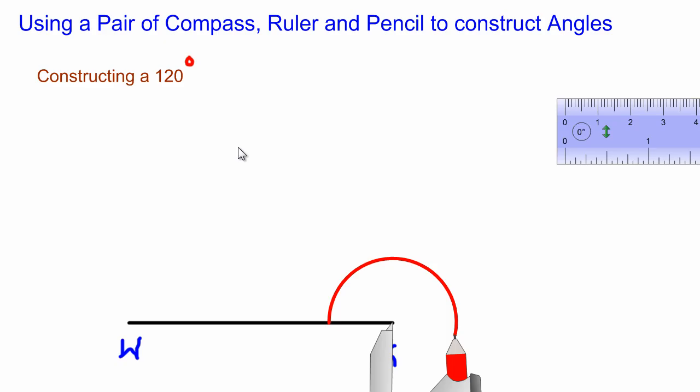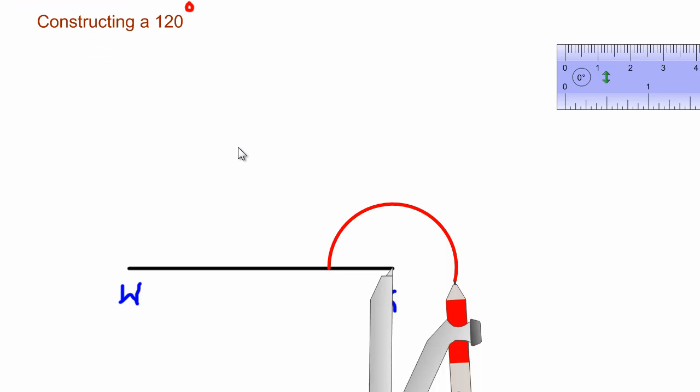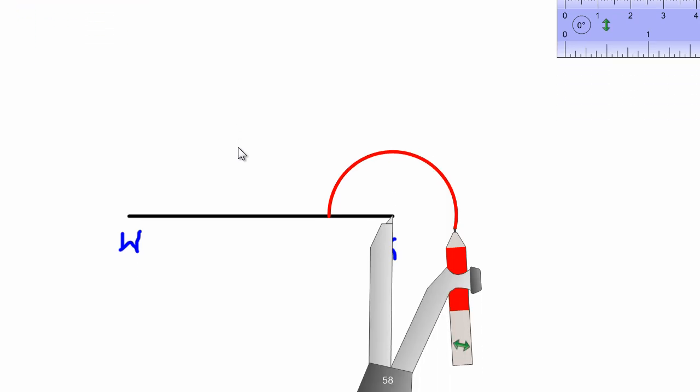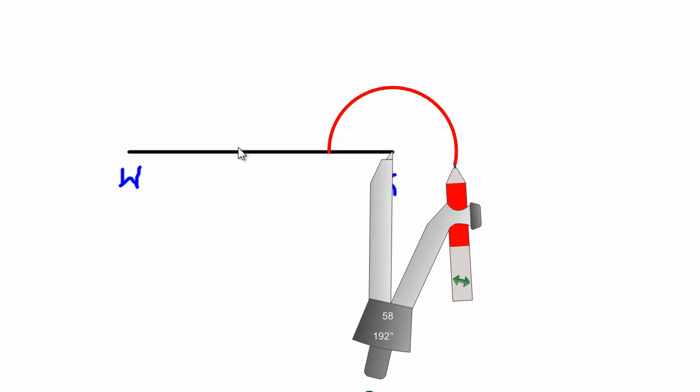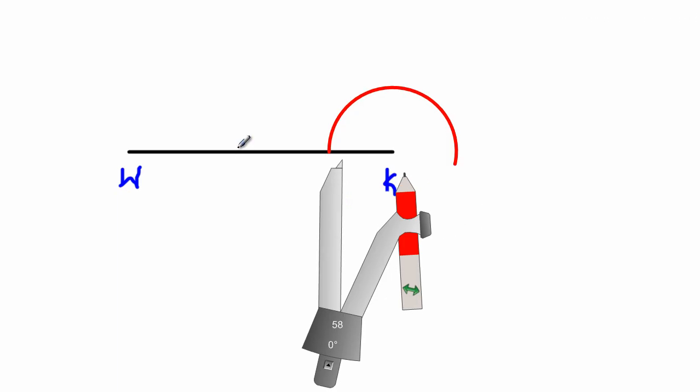Now after the arc has been swung, what I'm going to do is take my compass and place it at this point where the arc touches or cuts the line segment WK.